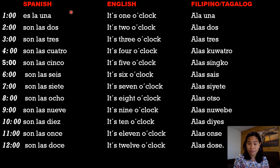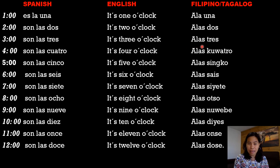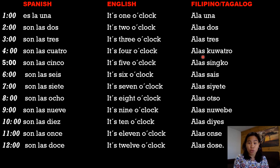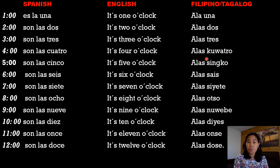I will discuss later what is the difference between es and son, and la and las. Son las tres — it's three o'clock. A las tres. Son las cuatro — it's four o'clock. A las cuatro. As you can see, Filipino and Spanish have the same pronunciation but different spelling. In Castellano, they have the letter C in cuatro, but in our Tagalog word, we have K. But we pronounce it the same in Castellano.